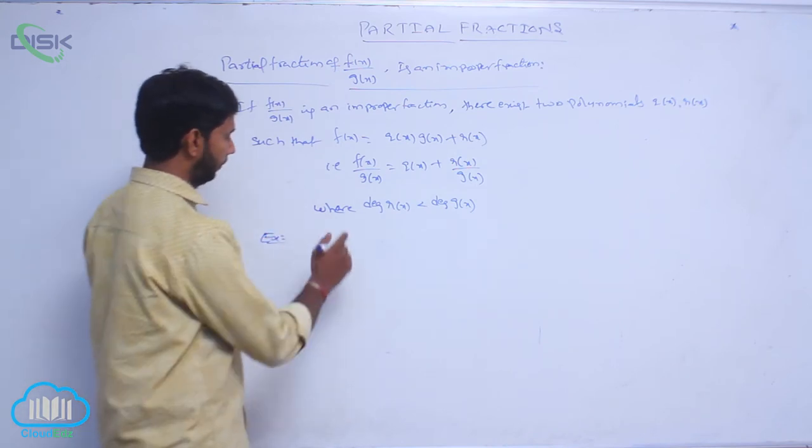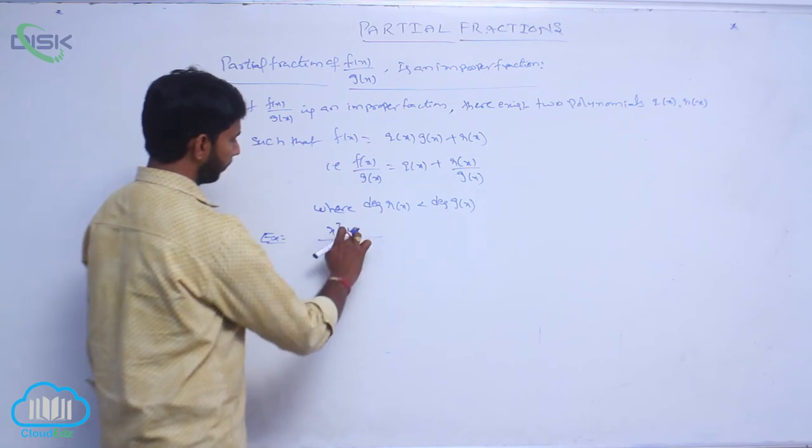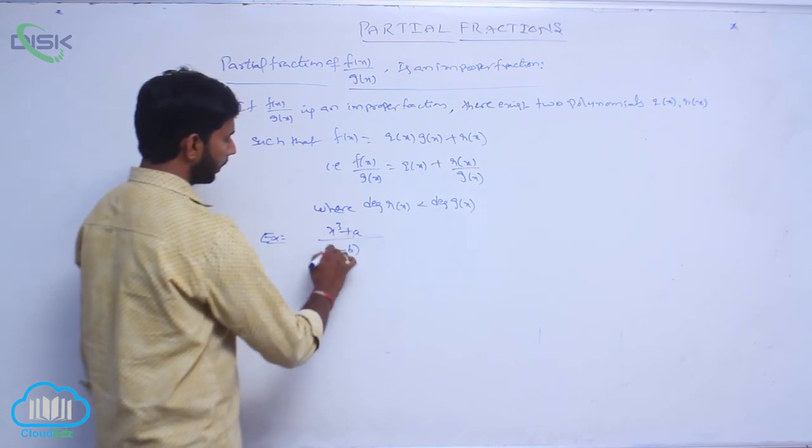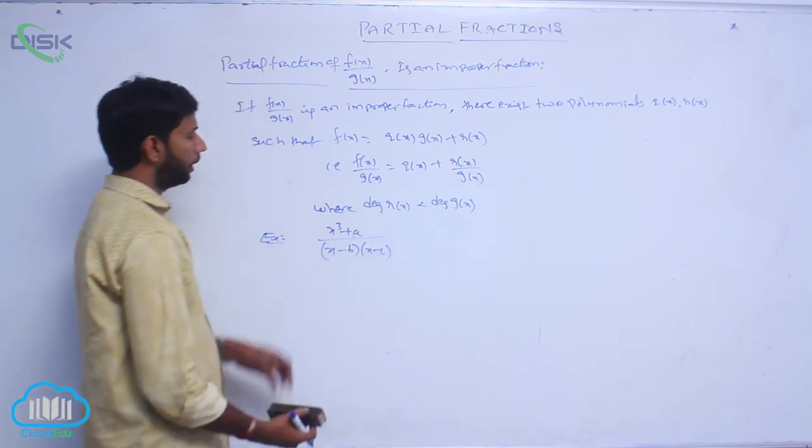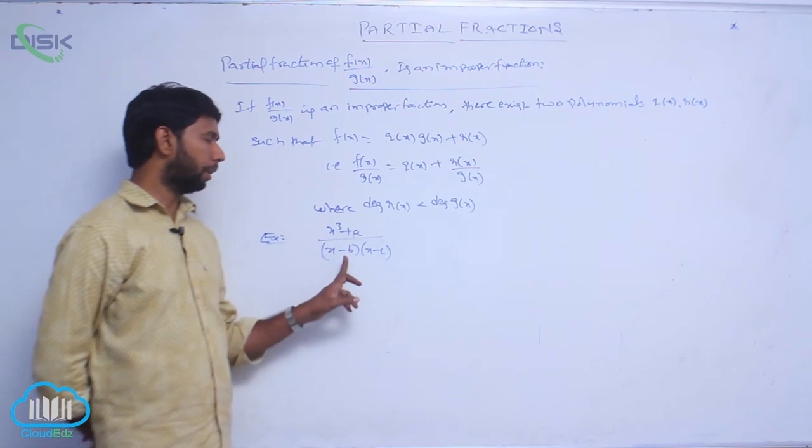Some example models are x a q plus 1 by x a q plus a by x minus b into x minus c. Here degree of numerator is 3 and degree of denominator is 2, that is improper fractions.